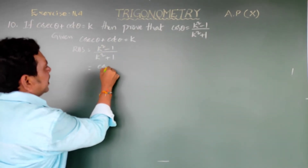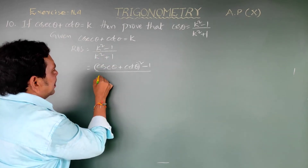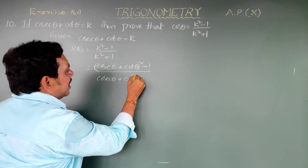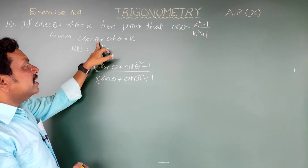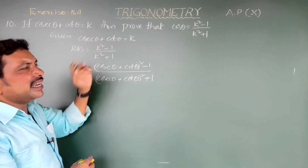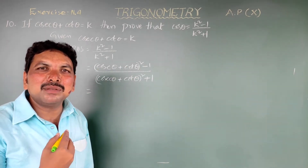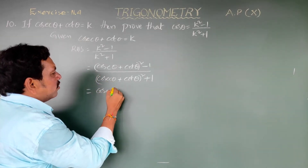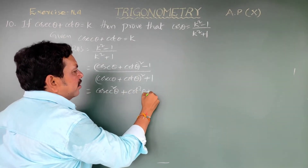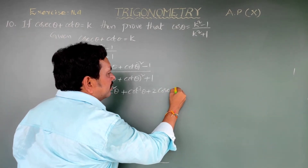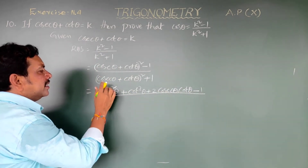Write down: (cosecant theta plus cot theta) whole square minus 1, divided by (cosecant theta plus cot theta) whole square plus 1. In the numerator, (a plus b) whole square equals a square plus b square plus 2ab, so this becomes cosecant square theta plus cot square theta plus 2 cosecant theta cot theta, minus 1.